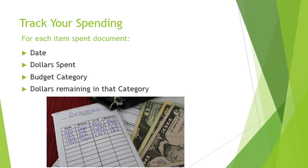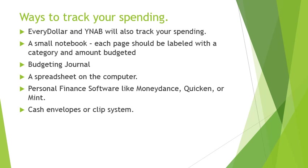The next step is tracking your spending. The key is you need to find a way to track the date you spent money, the amount spent, what category the expenditure comes from, and how many dollars remain in that category. What's nice about EveryDollar and YNAB is they do both — you can set up a budget and track your spending all in one package.